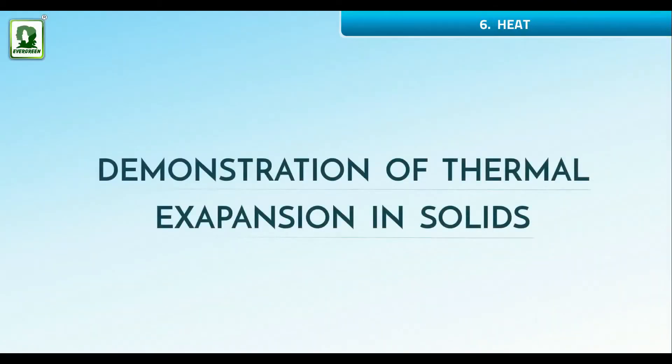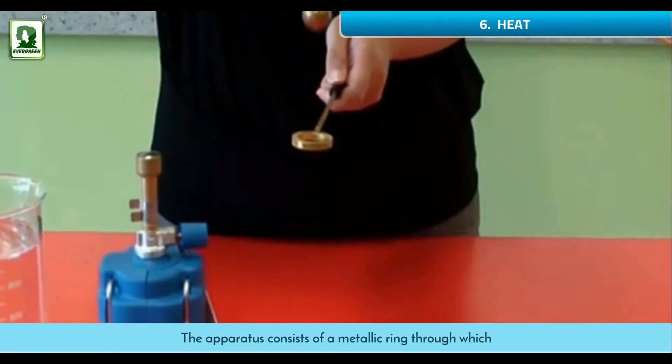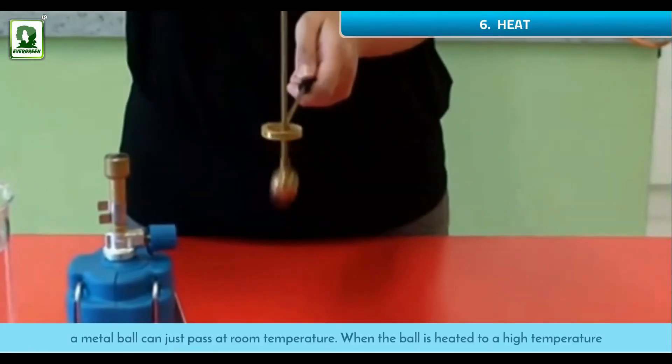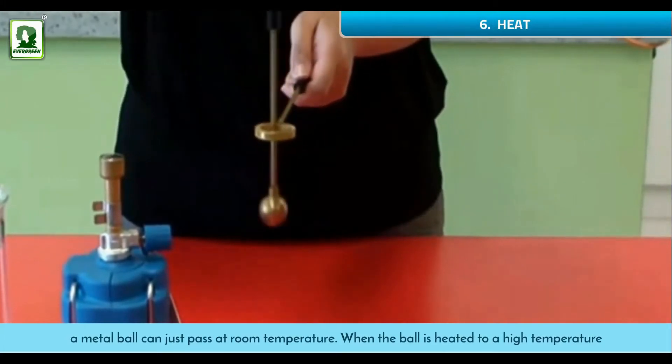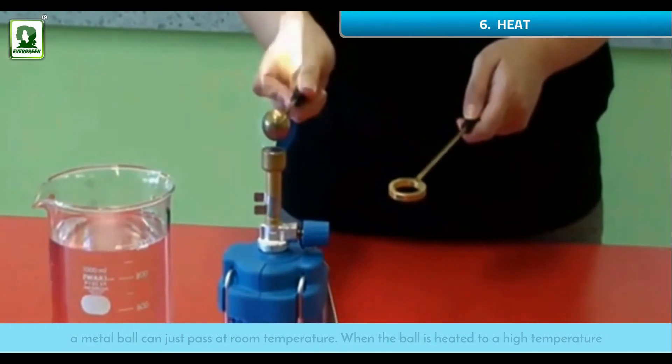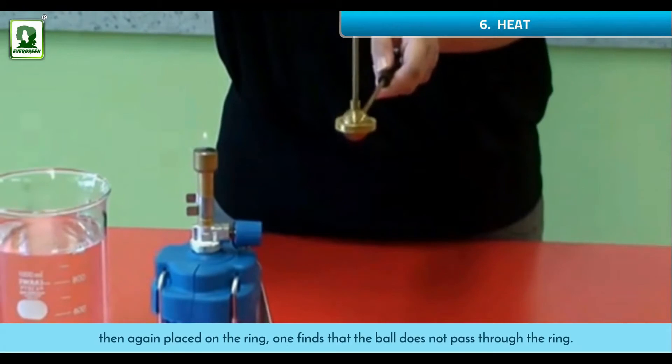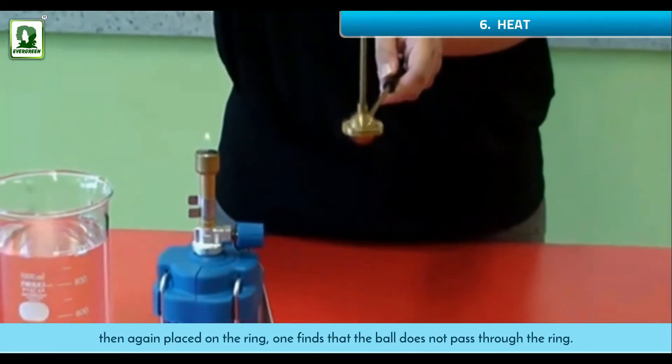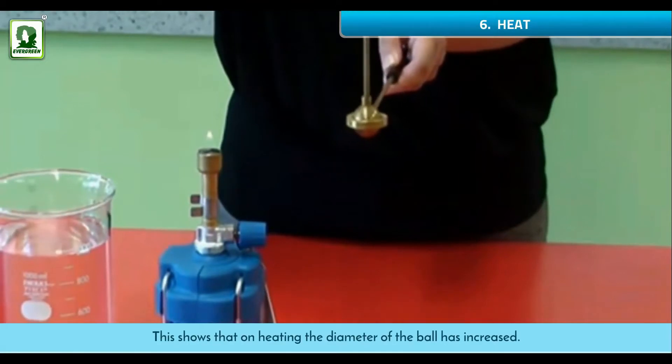Demonstration of thermal expansion in solids - Brass's ball and ring experiment: The apparatus consists of a metallic ring through which a metal ball can just pass at room temperature. When the ball is heated to a high temperature then again placed on the ring, one finds that the ball does not pass through the ring. This shows that on heating, the diameter of the ball has increased.